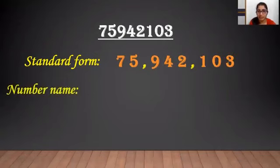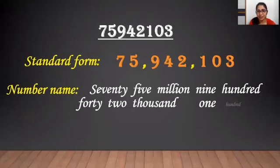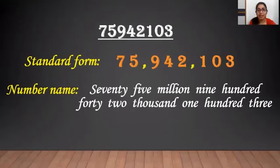And how can we read it? Just like that. It's seventy five million nine hundred forty two thousand one hundred three. Isn't it simple?